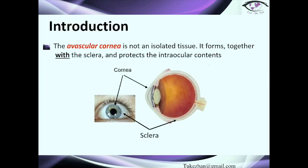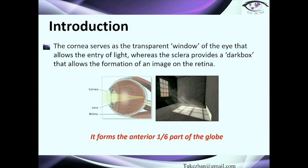So what is the cornea? The cornea is an avascular tissue and it's not an isolated tissue — it forms together with the sclera and protects the intraocular structure of the eye. The cornea serves as the transparent window of the eye that allows the entry of light, whereas the sclera provides a dark box that allows the formation of the image on the retina. As I said, it forms the anterior one-sixth part of the globe.